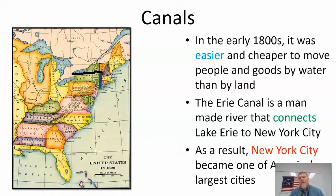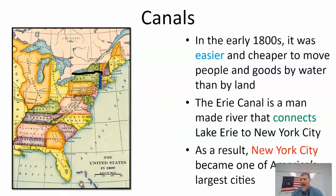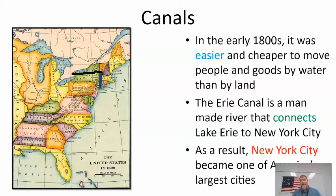The thing about water transportation is that for the most part, you can only transport where you have a waterway. There aren't many man-made waterways because it's just so difficult. But in the early 1800s, we start to have a boom in man-made waterways — we call these canals. In the early 1800s, it was easier and cheaper to move people and goods by water than by land, and in many cases that's still true today.